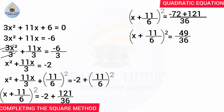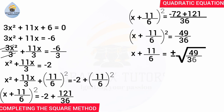Minus 72 plus 121 gives us 49, so we have (x plus 11 over 6) squared equals 49 over 36. We now take the square root of both sides, giving x plus 11 over 6 equals plus or minus the square root of 49 over 36. The square root of 49 is 7 and the square root of 36 is 6, so we have plus or minus 7 over 6.